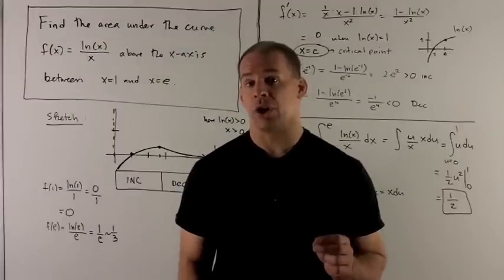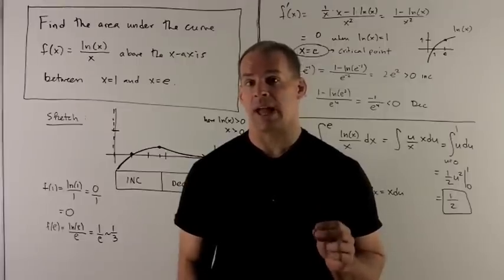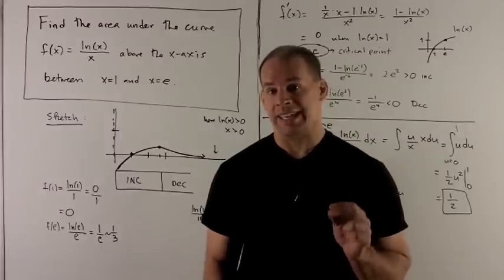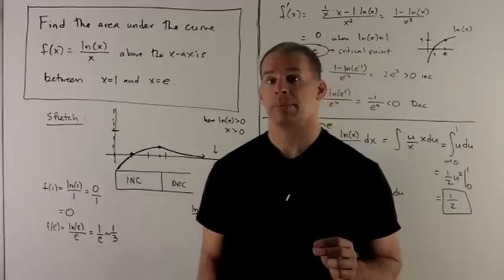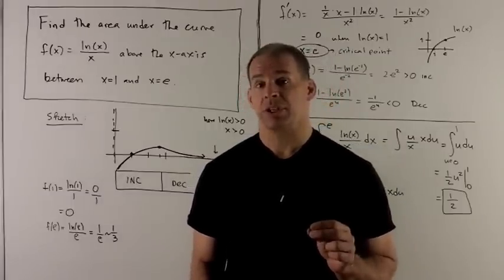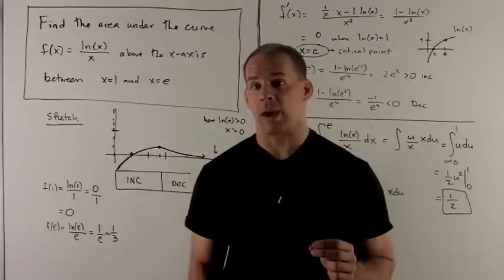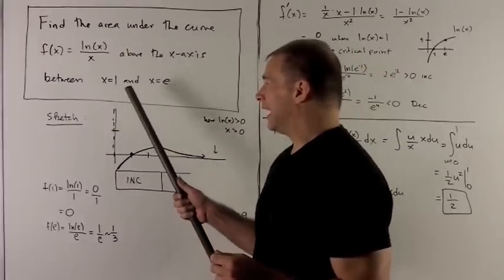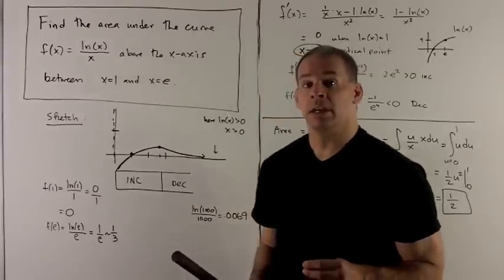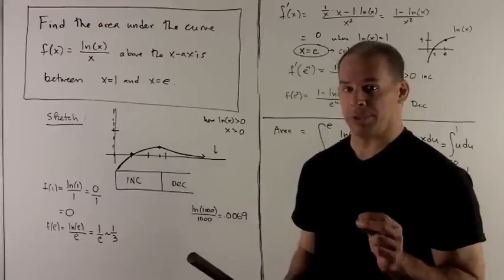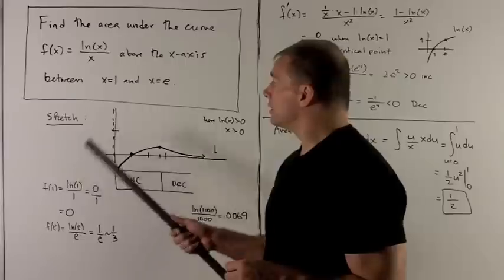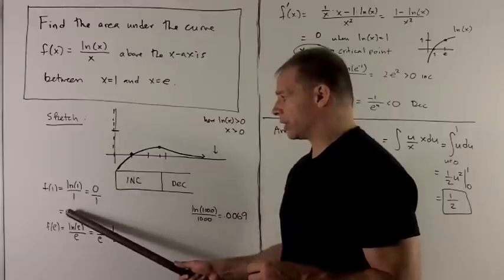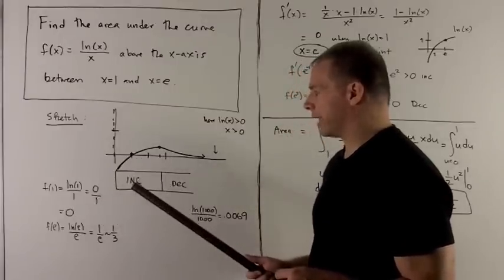Let's find the area under the curve f(x) = ln(x)/x between x equals 1 and x equals e over the x-axis. First, I want to sketch the curve, which will give us a little workout with natural log of x. We're interested in x equals 1 and x equals e, so we should plot those points. If I put 1 into the original function, I get ln(1)/1, which is 0/1, which is 0. So we have a point at x=1.